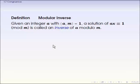Okay, let's define a very important terminology here. For any given integer a with a and m relatively prime, the solution of ax congruent to 1 modulo m is called an inverse of a modulo m.